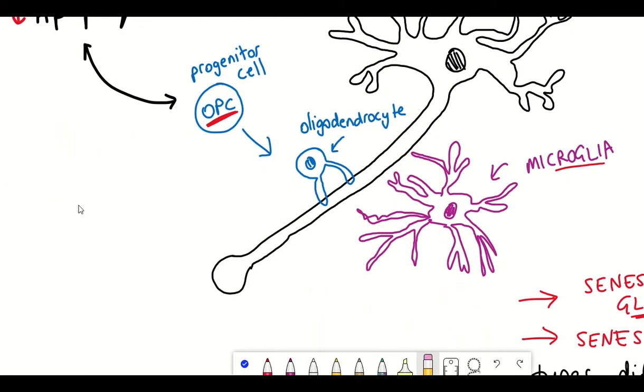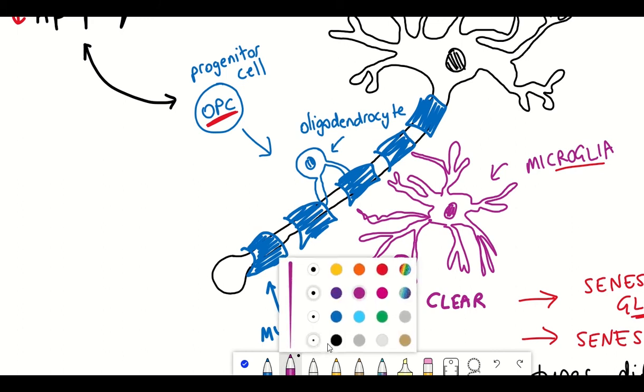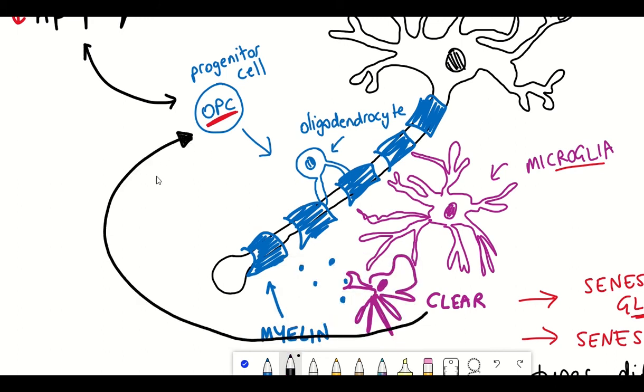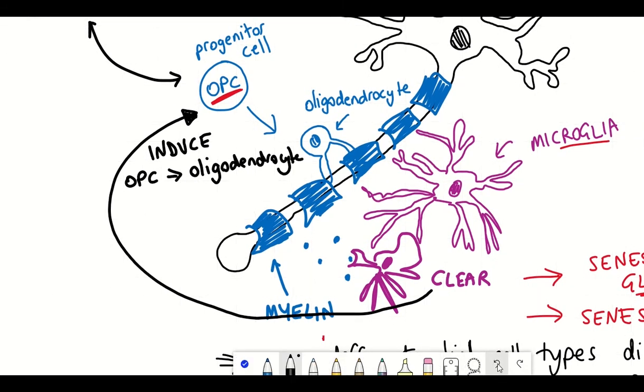Myelin is an insulating sheath that surrounds neuron cells and it's deposited mainly by the oligodendrocytes. When the myelin gets lost and fragmented it's then the role of the microglia to clear this myelin debris and secrete signaling factors that can then promote the differentiation of these OPC cells to become oligodendrocytes to try and remyelinate the neurons.